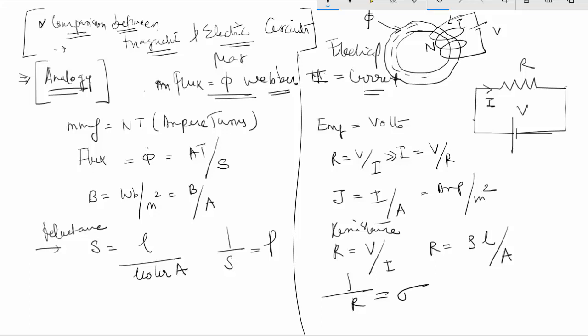If you see for a series magnetic circuit, the total MMF phi S1 plus phi S2 plus phi S3 will be equal to the total MMF consisting of different series magnetic circuits. And the same EMF V will be equal to IR1 plus IR2 plus IR3. Here the flux will be same, while in electrical circuit the current will be same.